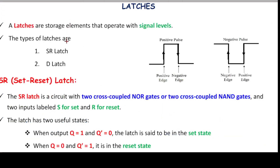Next we will try to understand what is a latch. Basically, there are two types of latches: one is called SR latch and one is called D latch. We will start with understanding what is an SR latch. In the next video, we will discuss the SR latch — how it works, what SR means, why the name is SR — and then we will go with the D latch. See the next video for understanding the SR latch.